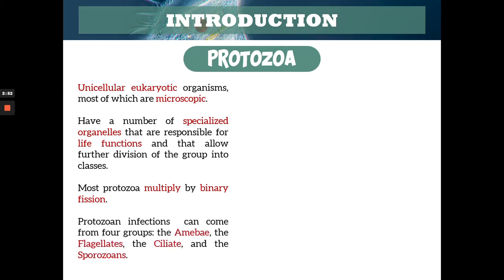For infections caused by protozoa in humans, they are divided into four groups — as I have introduced in our first lecture on the introduction to parasitology. The four major groups of protozoa that can cause infection to humans are: first, your amoebae; then the flagellates; the ciliates; and lastly, the sporozoans.